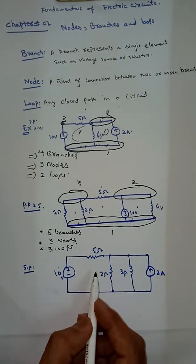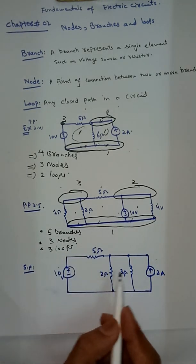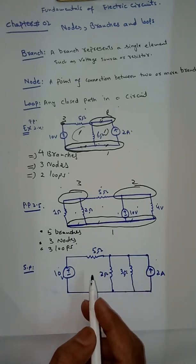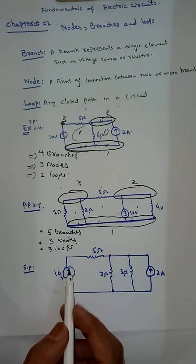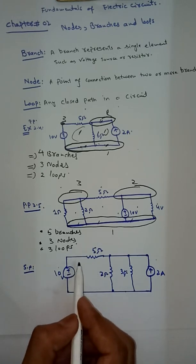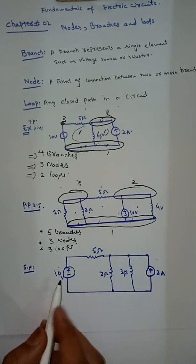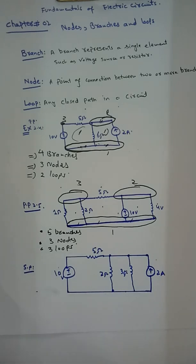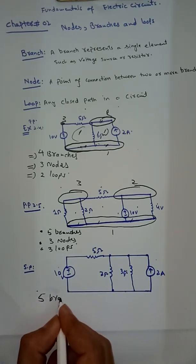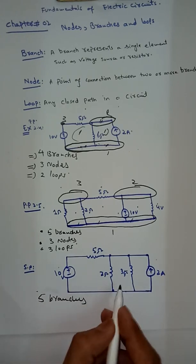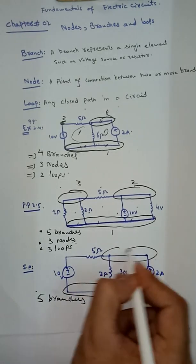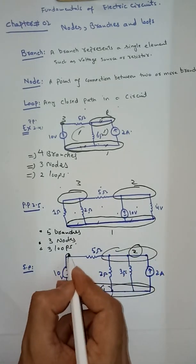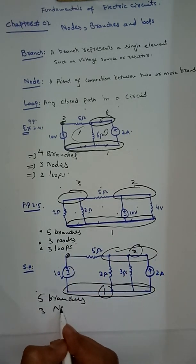In this particular circuit: one, two, three, four, five — branches are very easy to find, you just need to count the number of single elements. So we have five branches. We don't have any element here so that's one node, no element here so two nodes, and three — we have three nodes again.